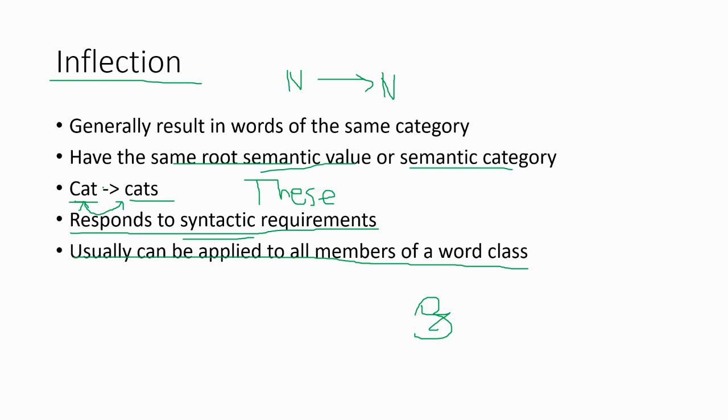Mass nouns will be sort of logically different. You don't really have a plural of a mass noun usually unless it's different types of that noun. For example, like juice - we wouldn't say I'm drinking these juices unless you're saying these types of juice. But in general, it's not a perfect rule, but in general these inflectional processes can be applied to all members of a word class.